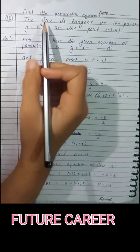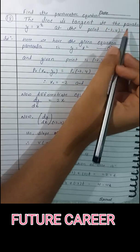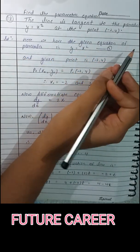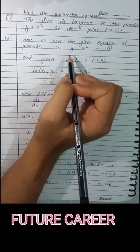We have the given question: find the parametric equation of the line tangent to the parabola y equals x squared at the point (-2, 4). Hence, we have the given equation of parabola is y